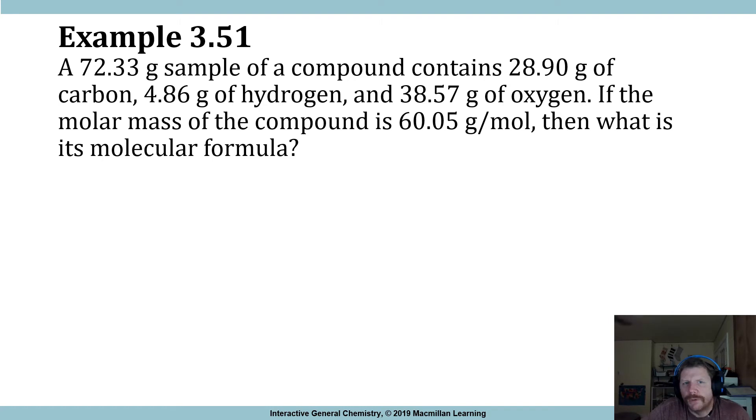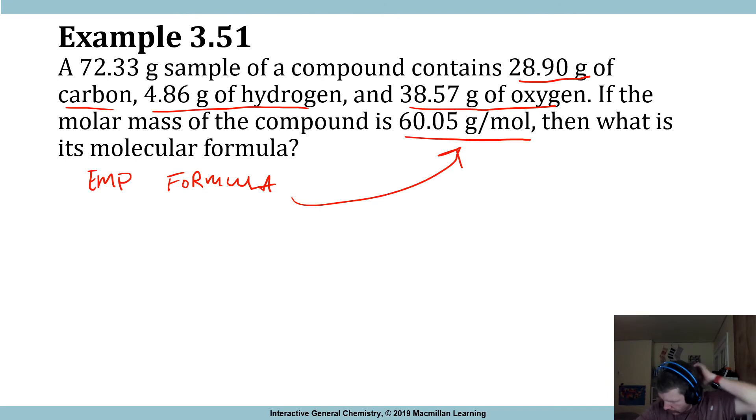So in practice, what that's going to look like is something like this. A 72.33 gram sample of a compound contains 28.9 grams of carbon, 4.86 grams of hydrogen, 38.57 grams of oxygen. If the molar mass of the compound is 60.05 grams per mol, what is the molecular formula? In order to answer this question, the first thing that you have to do is you have to figure out the empirical formula and then relate that to this known molar mass of the molecular formula. That will give you that factor, that multiplying factor, that you can then apply to all the subscripts.